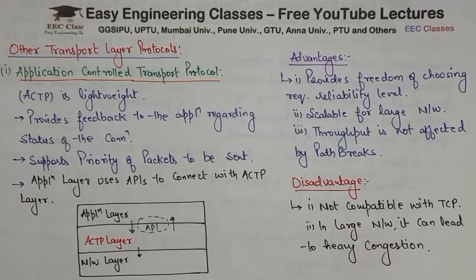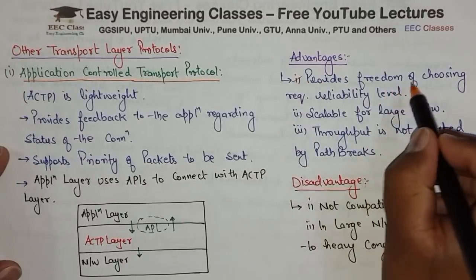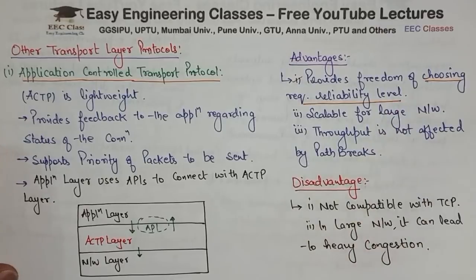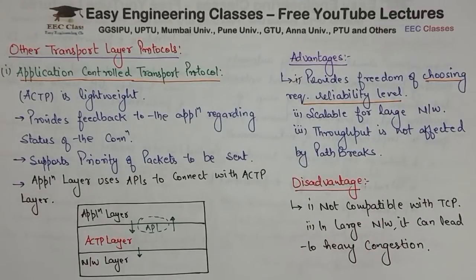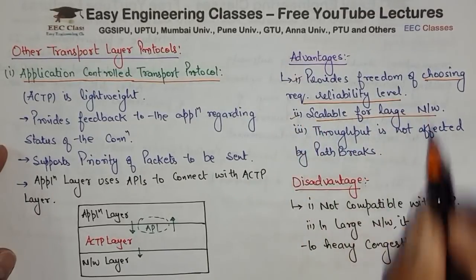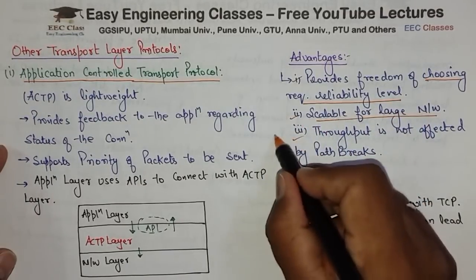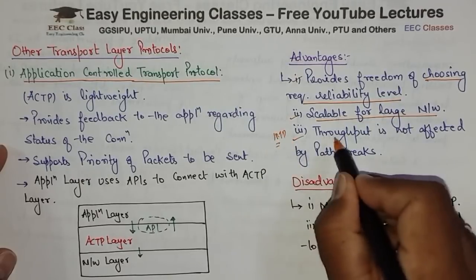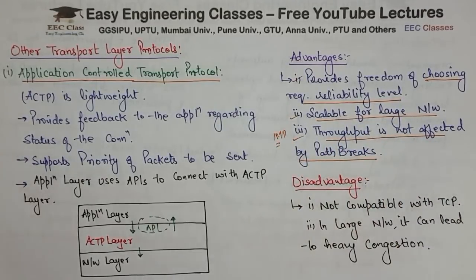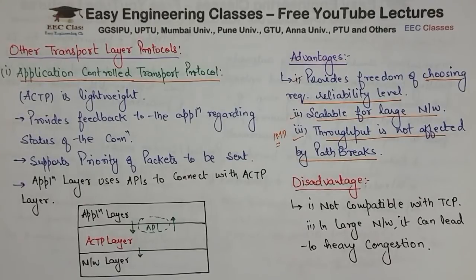Now let's see the advantages and disadvantages. The first advantage is it provides freedom of choosing the required reliability level. Second is it is scalable for large networks. And the third and most important is that throughput is not affected by path breaks.